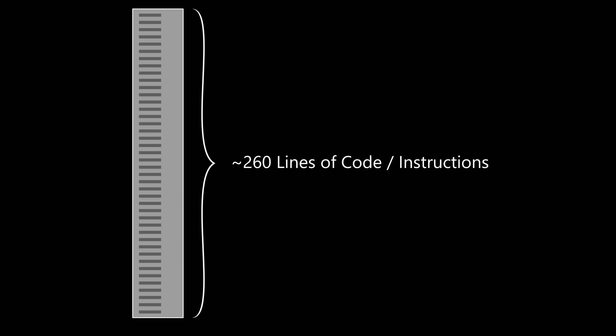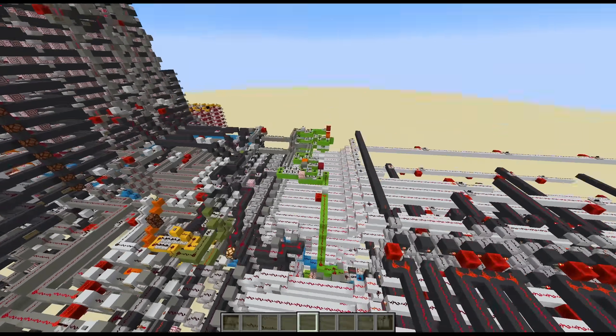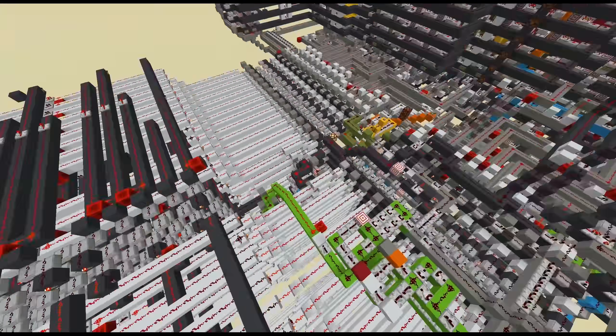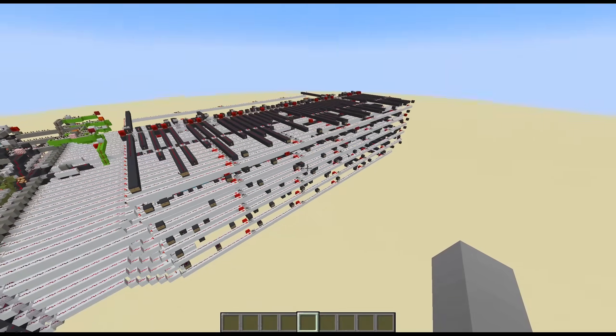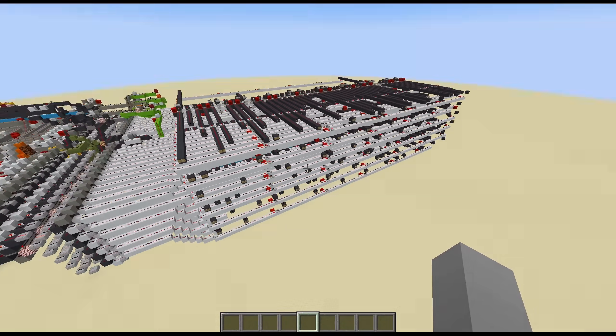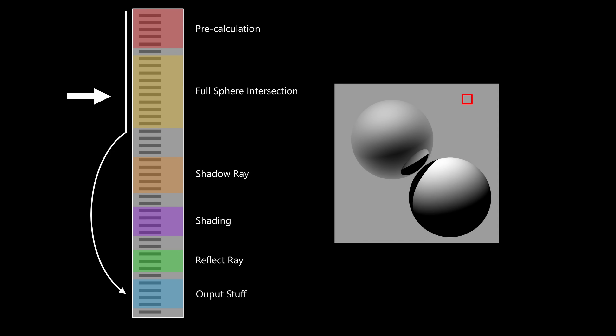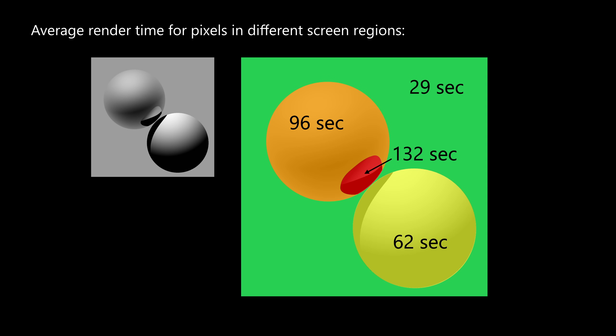The program has around 260 lines of code, and it is structured in a way that is very similar to functions in programming. For example, one part of the code does the main line sphere intersections, another part can reflect the ray, and so on. This green part here allows me to basically jump around inside the program — it lets me move the reading position vertically and horizontally, so we can basically do simple if-else statements. For example, first the program checks if the ray intersects any of the two spheres, and if not, it will just output the sky color to the display. We don't have to calculate all the fancy reflections and shadows in this case, and this makes pixels that only show the sky run very fast.